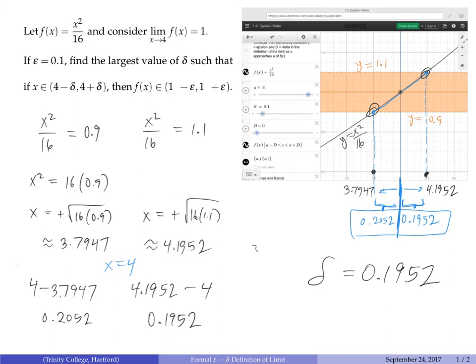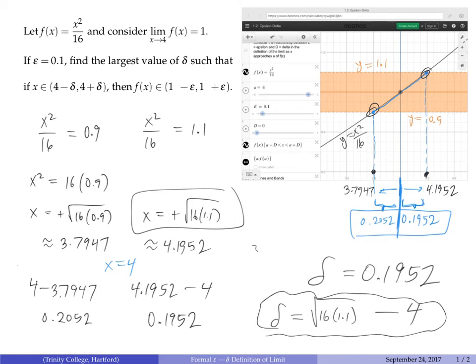If you want to be even more precise, since the intersection on the right side occurs first at x = √(16×1.1), we can leave our answer exact in terms of this value. The true delta is √(16×1.1) - 4, of which 0.1952 is just an approximation good to four decimal places.